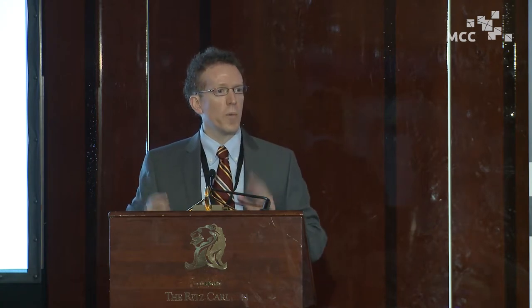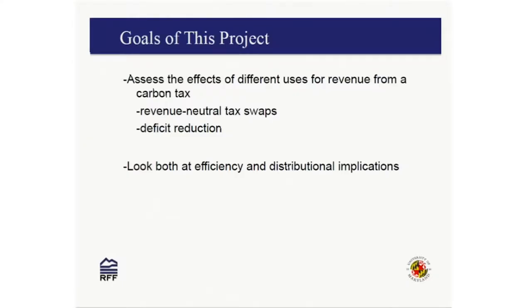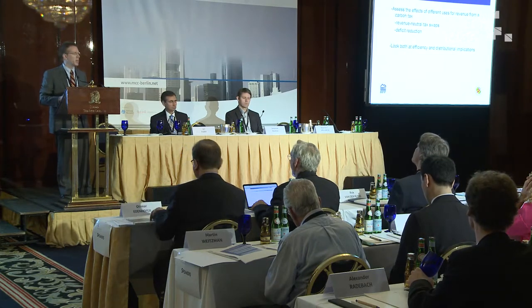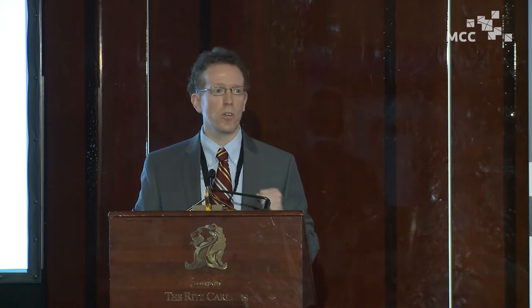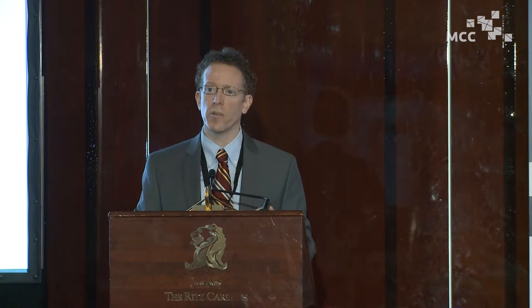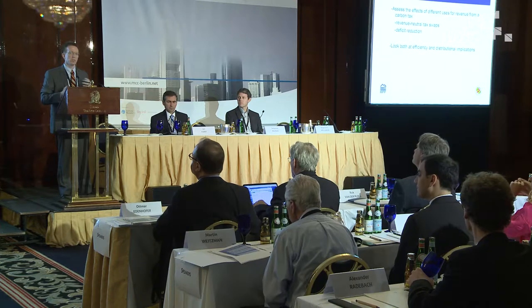What I'll be presenting today is only one piece of this project. What we're looking to do is look at the effects of a carbon tax in this kind of setting, and think about different ways of using the revenue from a carbon tax — using it for tax swaps, for deficit reduction, a range of different possibilities. We want to look at both the efficiency implications and the distributional implications across a number of dimensions. Today I'll just be talking about across generations, but we're also interested in distribution across geography, across incomes, and things like that.